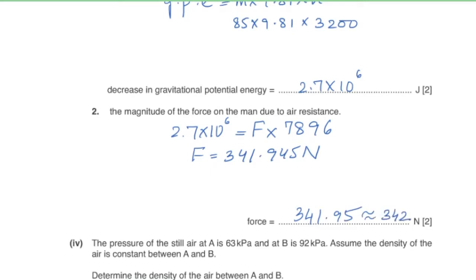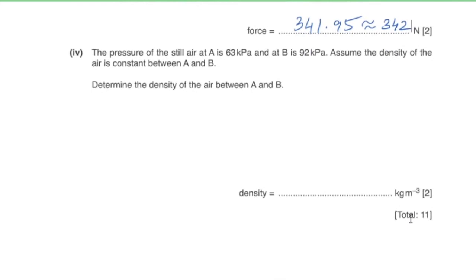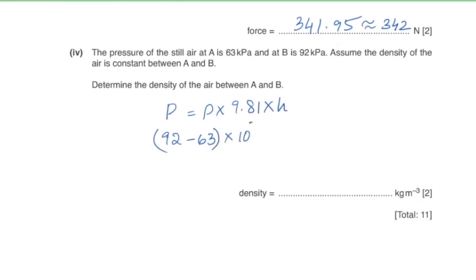Part five: the pressure of still air at A is 63 kPa and at B is 92 kPa. Assuming constant density between A and B, use pressure = density × 9.81 × height. The change in pressure is (92 − 63) × 10³ Pa = density × 9.81 × 3200, giving a density of 0.92 kg/m³.